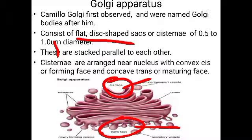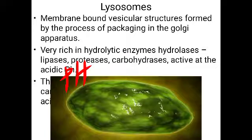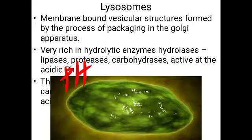The Golgi apparatus is also the site for the formation of glycoproteins and glycolipids. So glycoproteins and glycolipids are also produced in the Golgi apparatus.